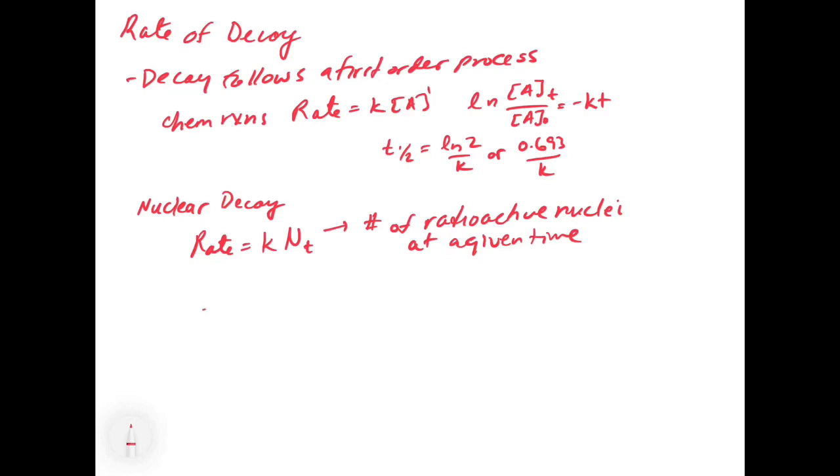So we can basically use the same exact equations. If this is the rate law, we can say that the number of radioactive nuclei at a given time divided by the initial number is going to equal the decay constant minus K times T. Instead of calling K the rate constant, we generally call it the decay constant. It's the same exact thing. It's a constant that allows us to relate the number of atoms as a function of time, given this natural log equation. And then the half life, or T1/2, is equal to ln of two over K, or 0.693 over K.